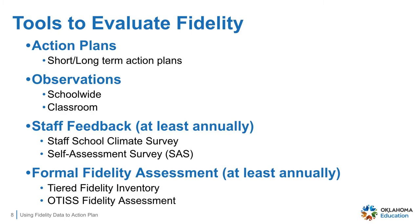There are several tools that can be used to assess fidelity. Action plans are created and followed throughout the entire process of implementing MTSS. Make sure your action plan is up to date and driving your systems and practices. Classroom and school-wide observations give insight into the fidelity of implementation around the building. This is a great way to see if your framework looks the same in all locations of the building. School climate surveys can give great feedback on the perceptions of the school and a unique perspective on strengths and areas of need.